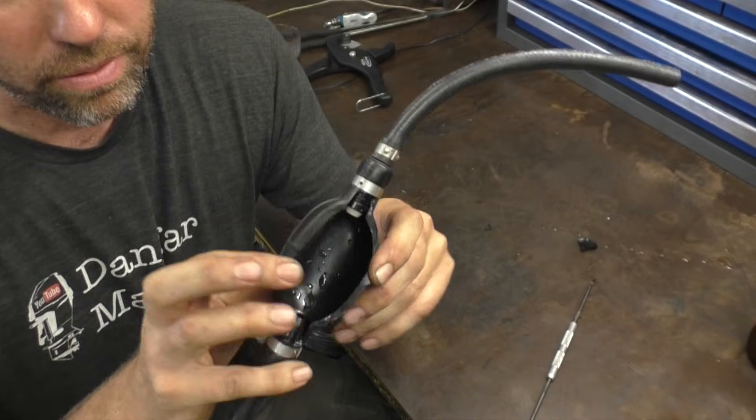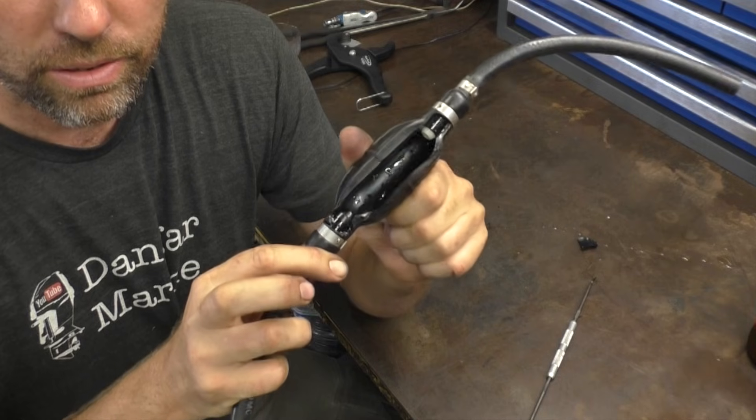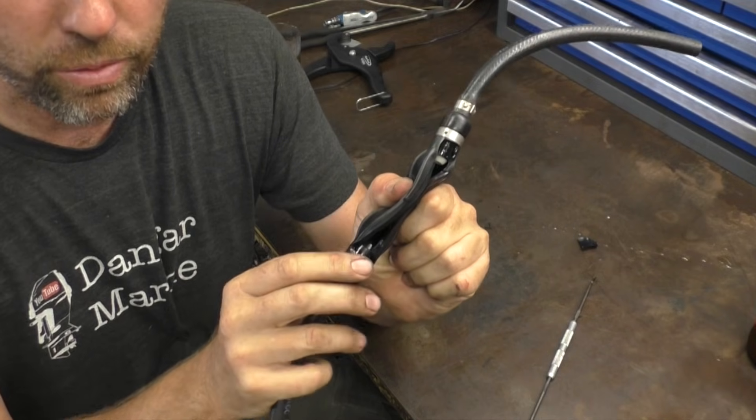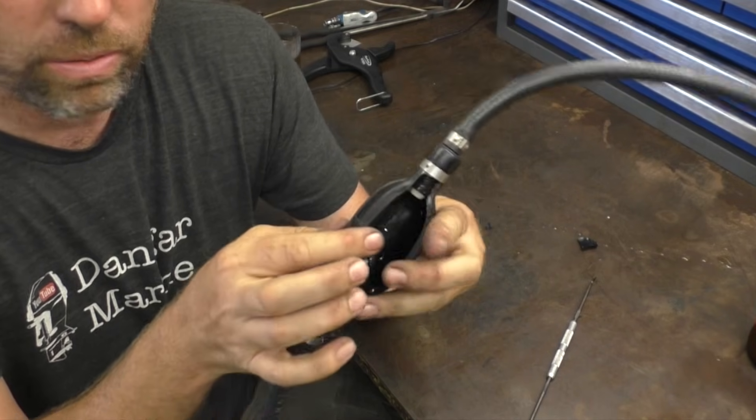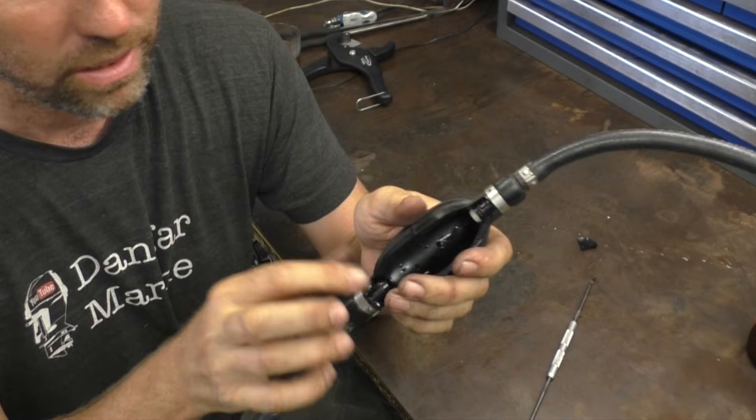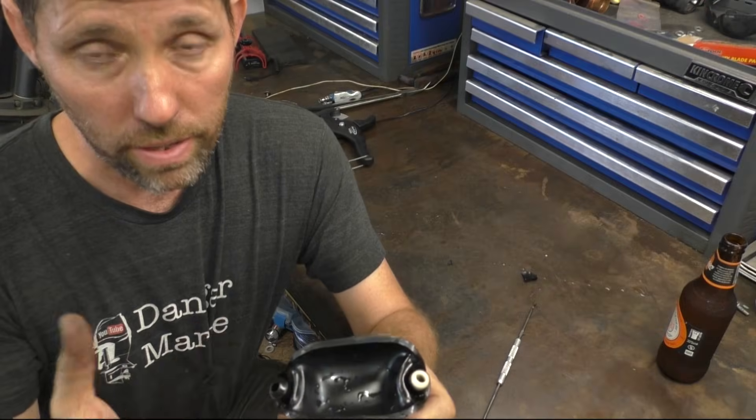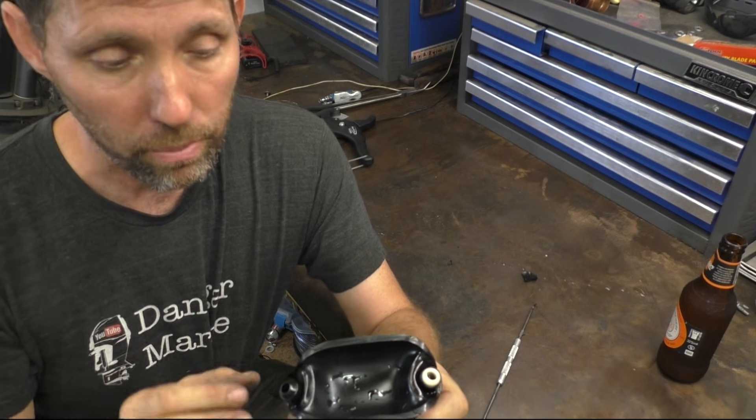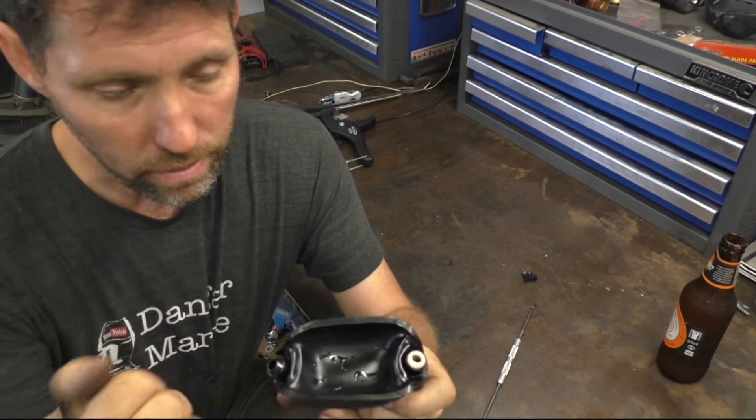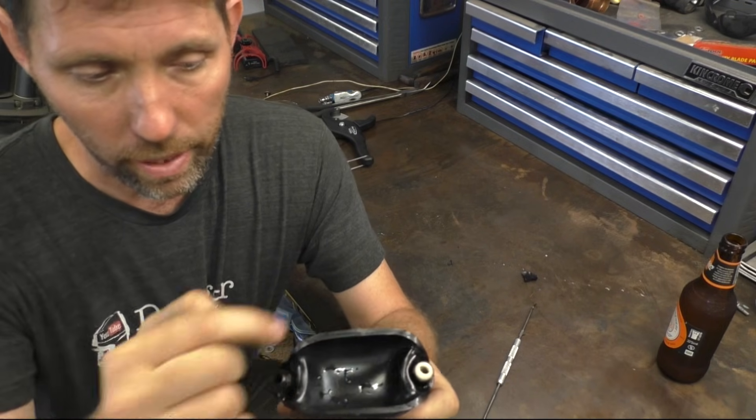Inside the main part of the bulb is pretty much nothing. It's just the space that you squeeze to push the fuel out, and then as the natural elasticity in the bulb expands, it draws fuel in. So the thing that allows this to act as a one-way pump, rather than just pushing fuel backwards and forwards every time you squeeze it, are these two one-way valves.